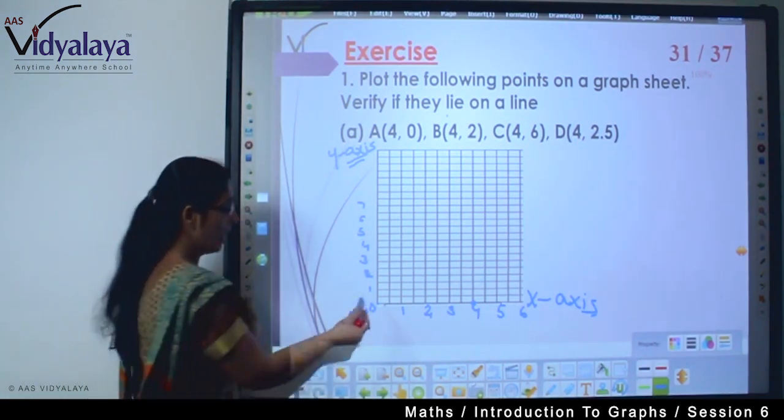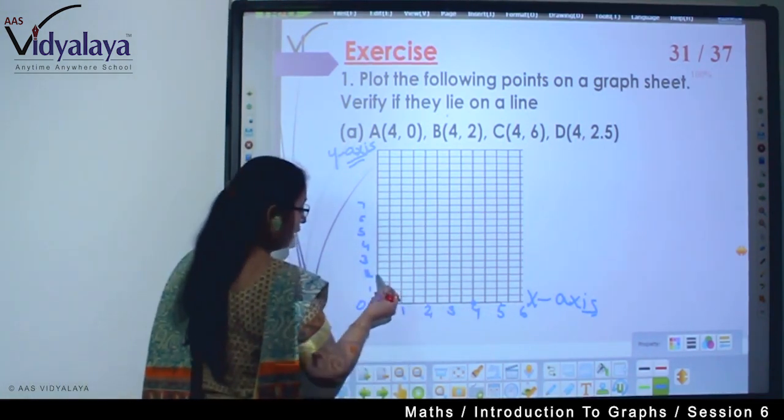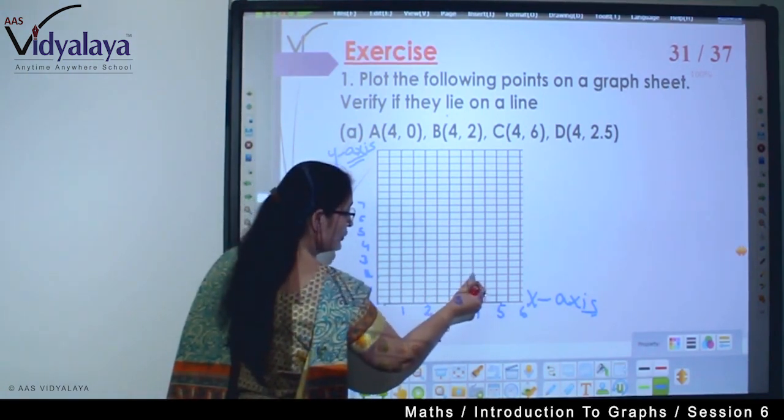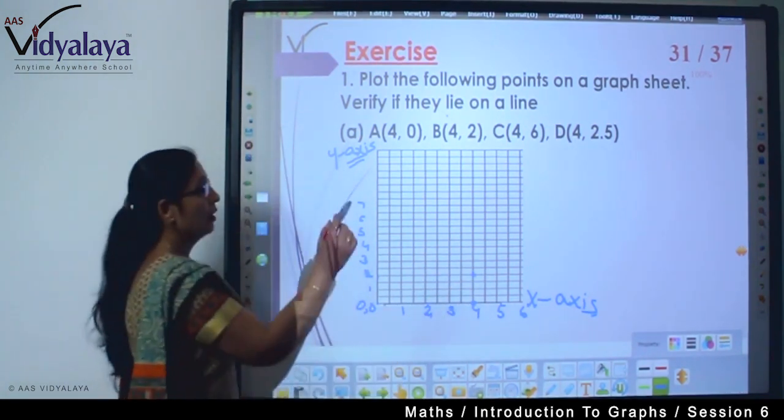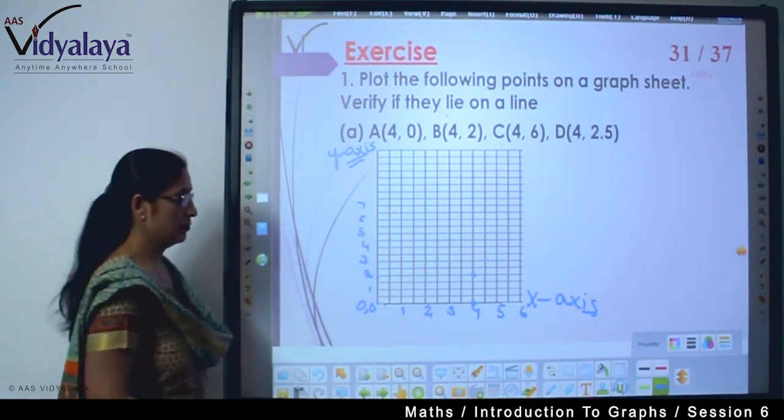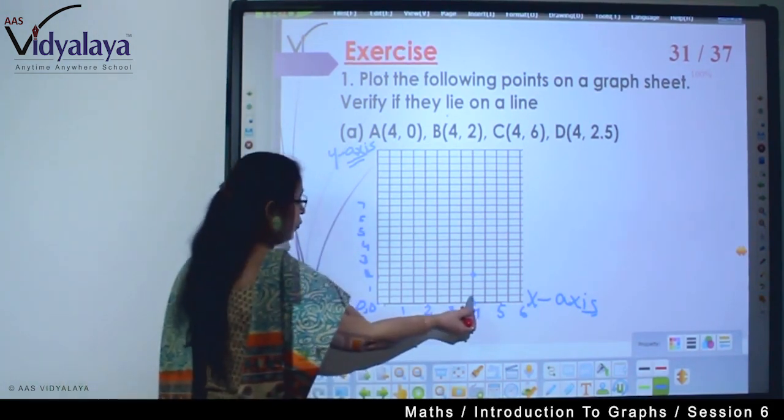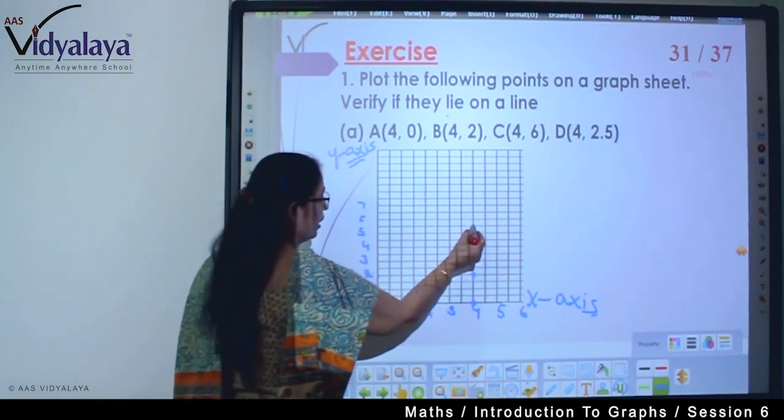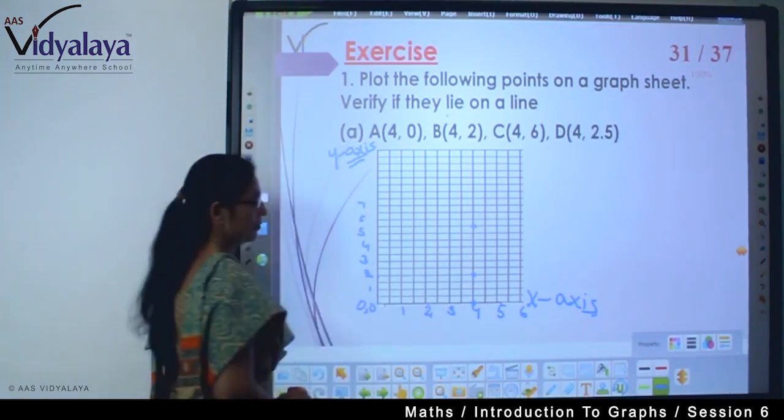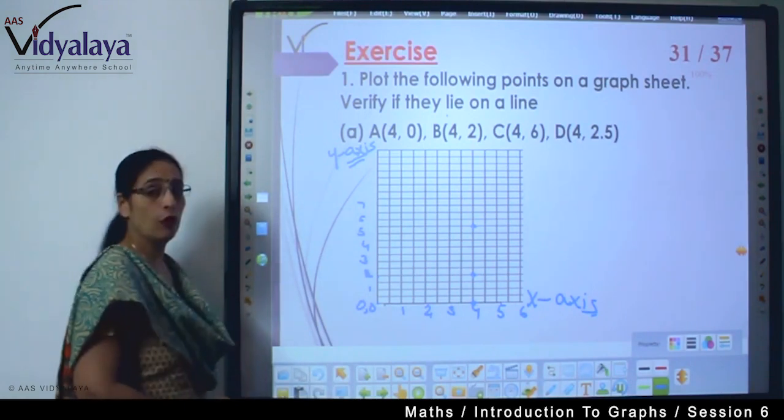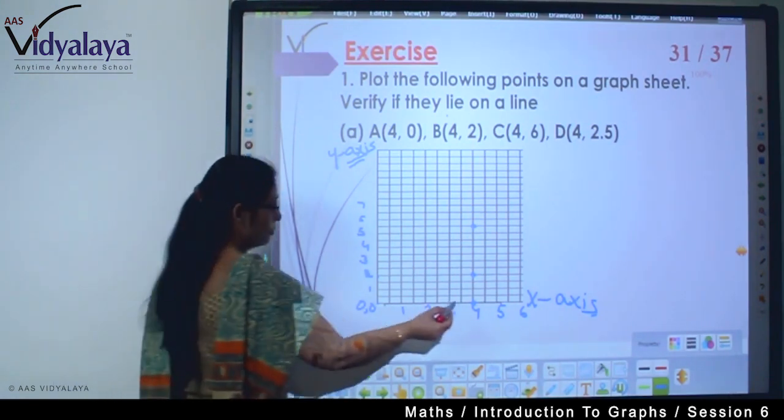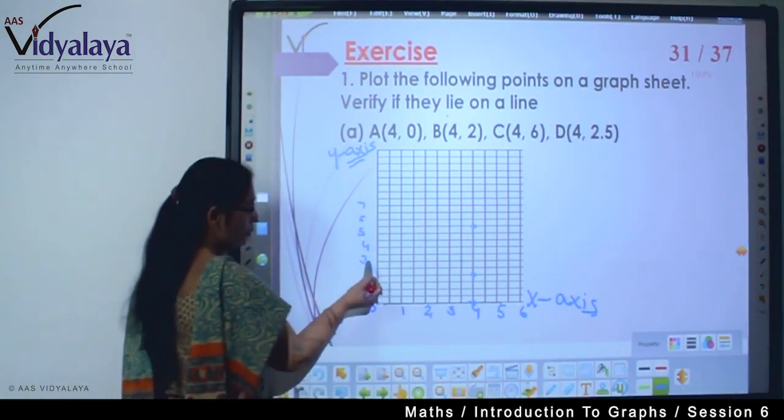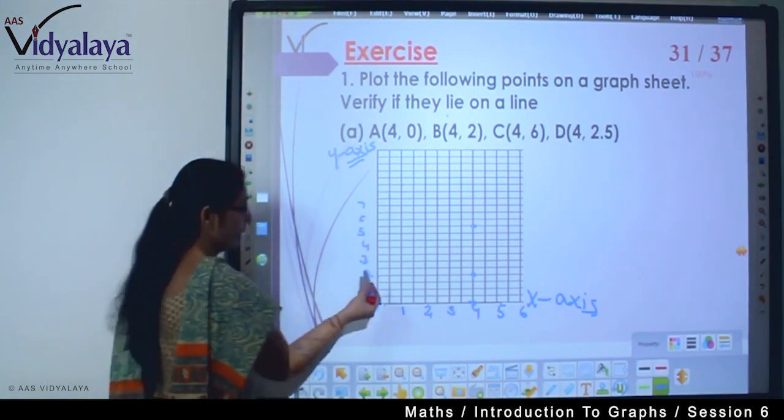Now four two - x-axis at four and y-axis at two, so this will come here. Four six - x at four and y at six, so this is my point.